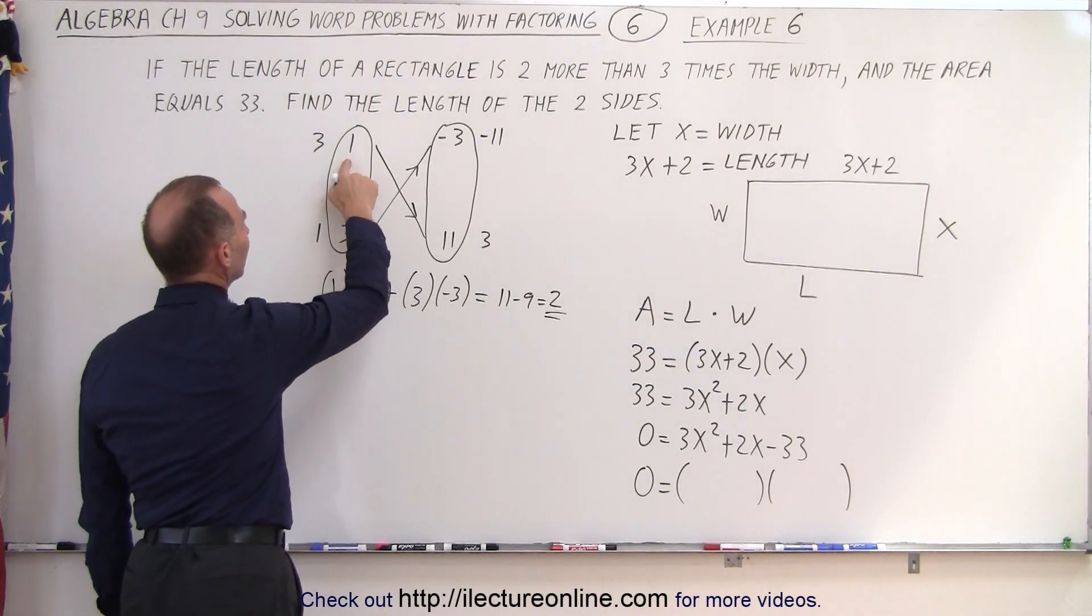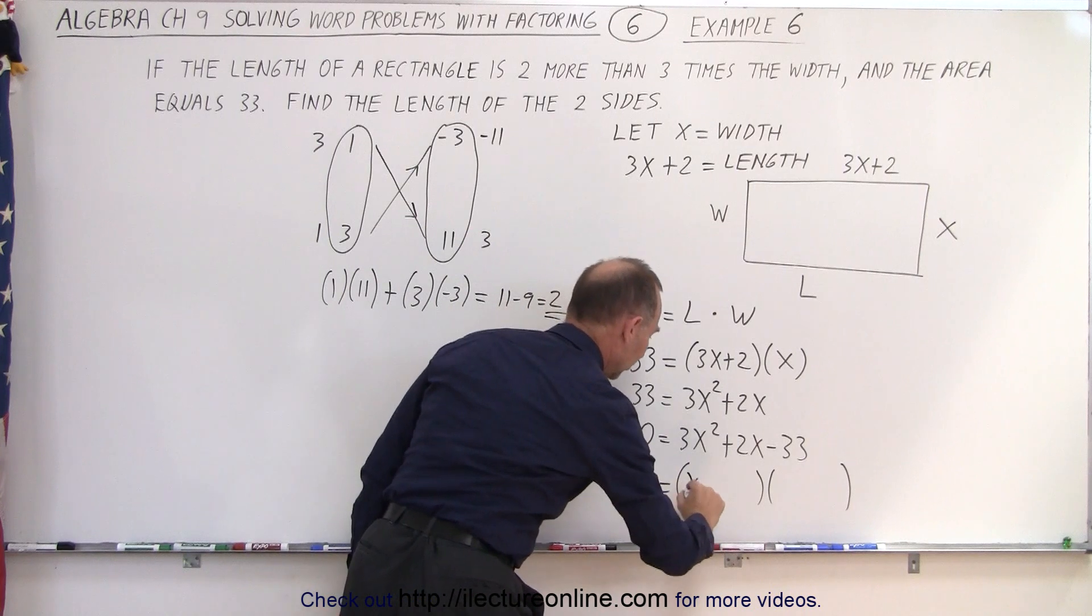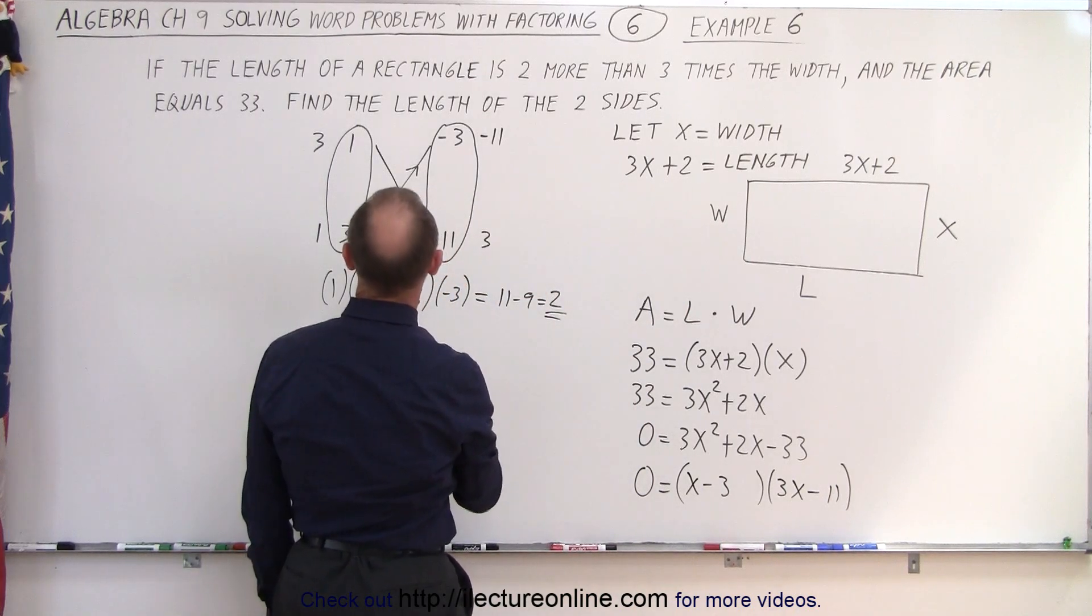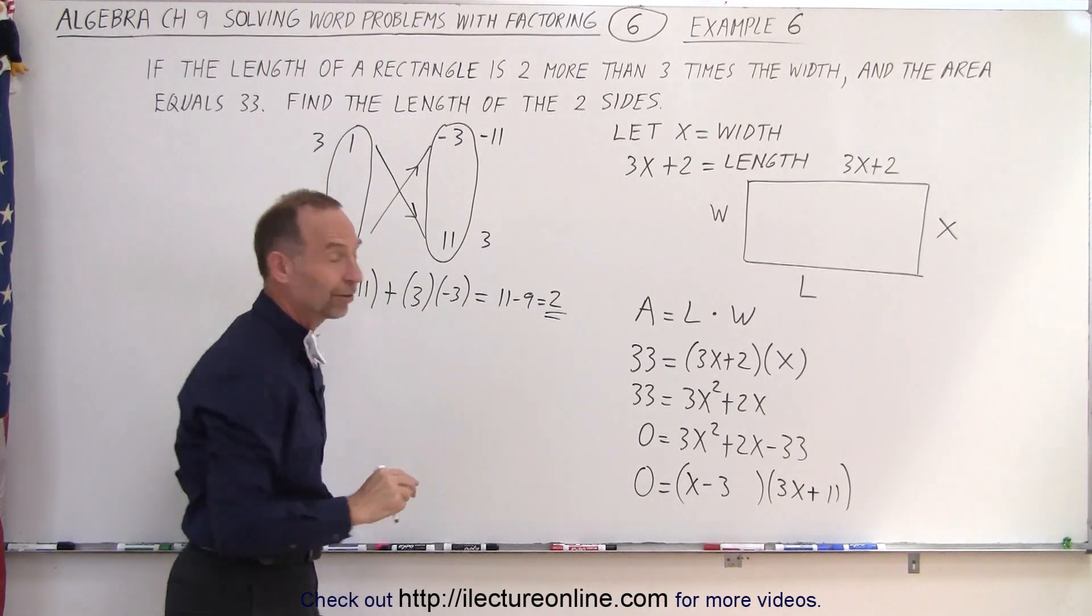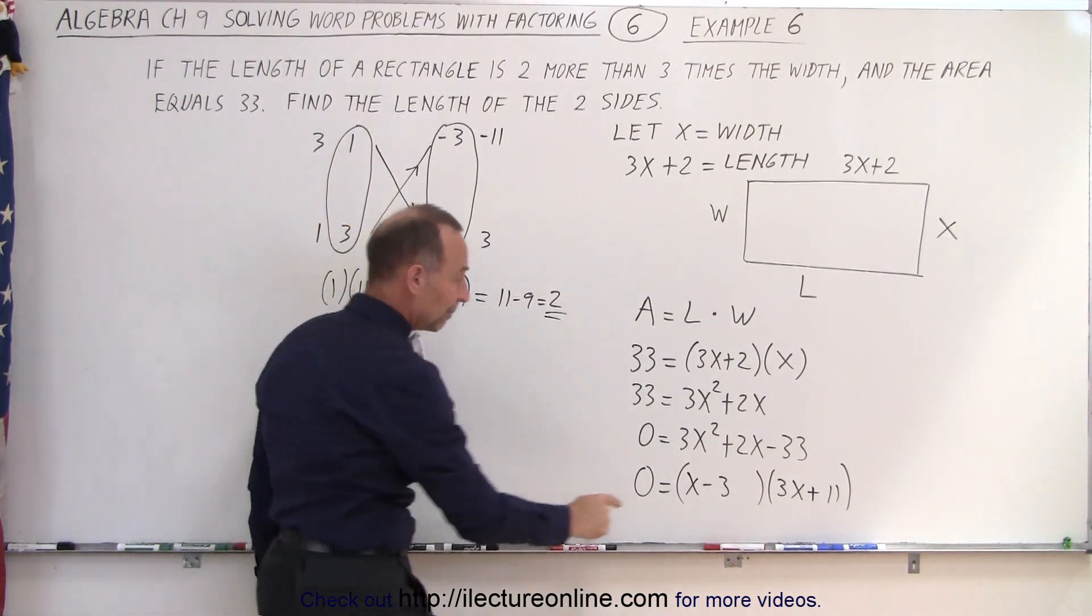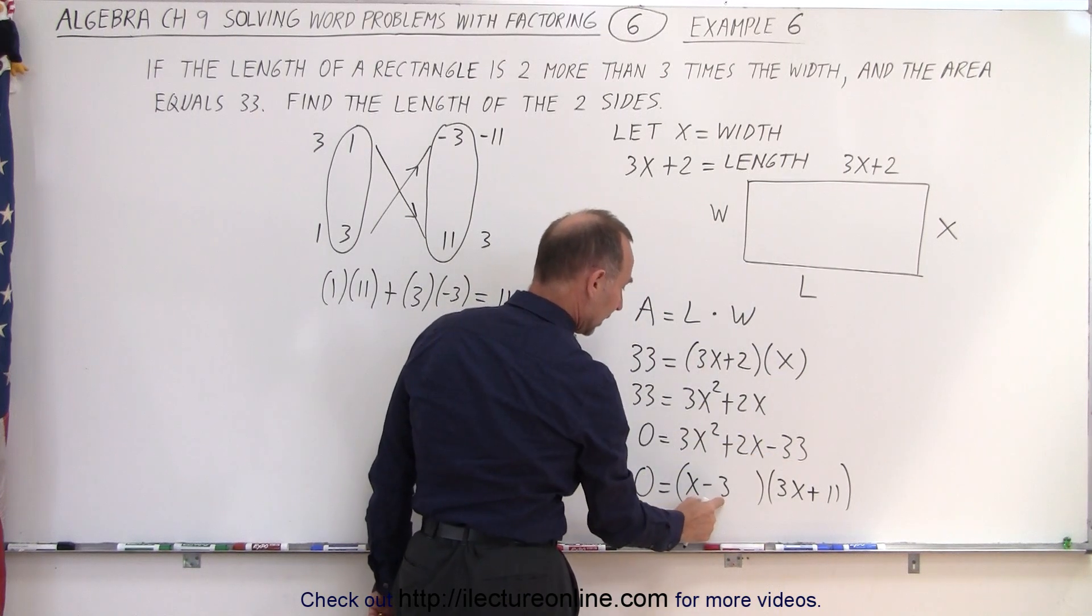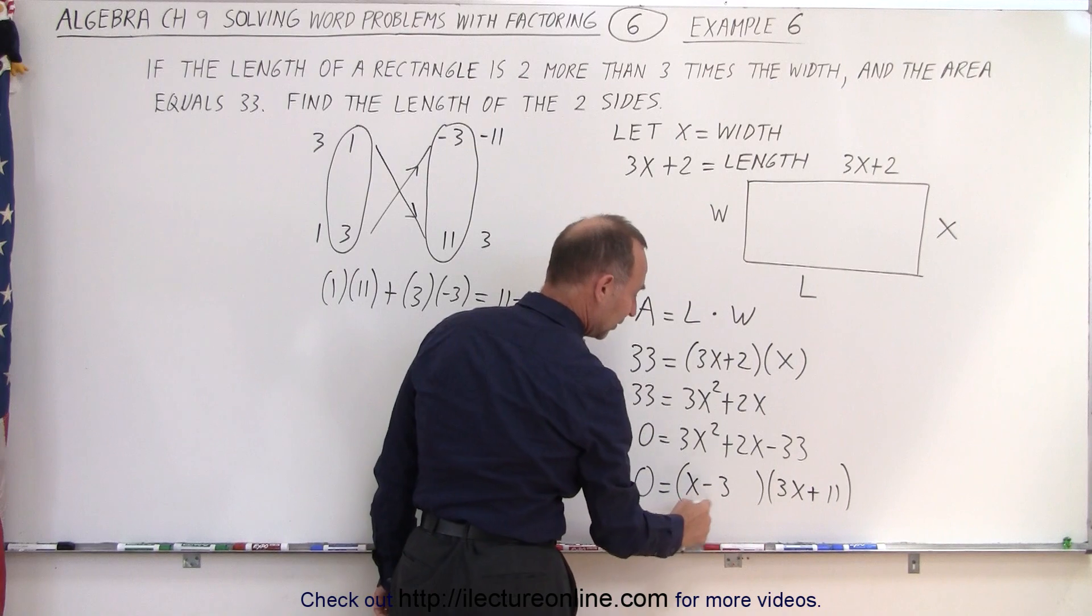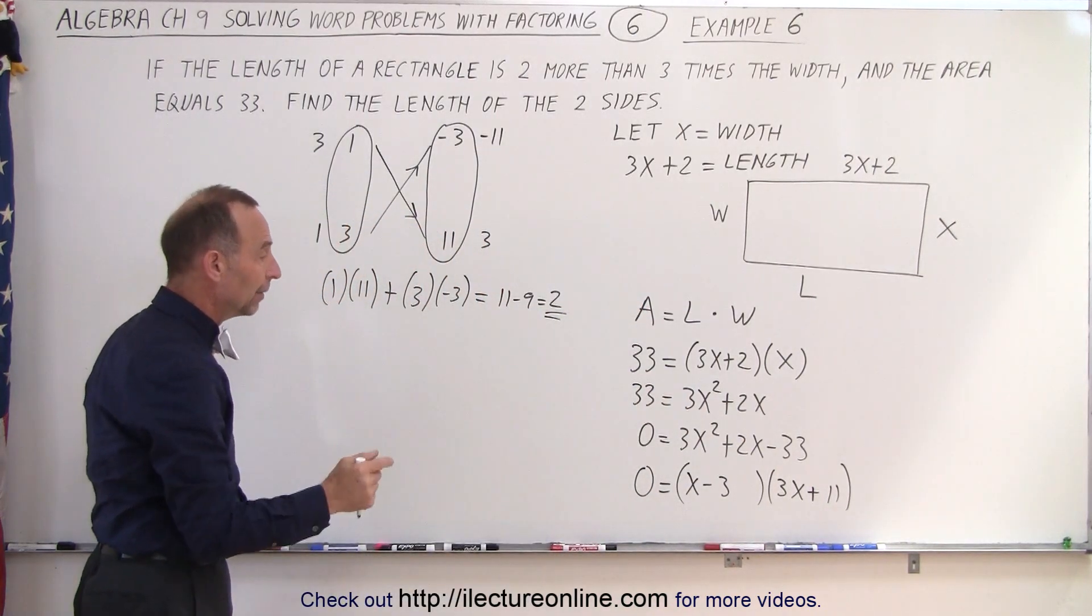That means I have x minus three and 3x plus eleven. So, x minus three and 3x plus eleven. Notice that minus three times eleven is negative thirty-three, and the negative three times 3x is minus 9x. Eleven times one is 11x. Eleven minus nine is 2x. So, we do get the middle term as well.